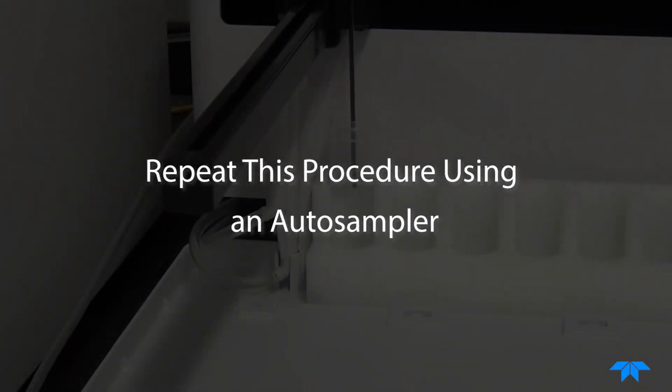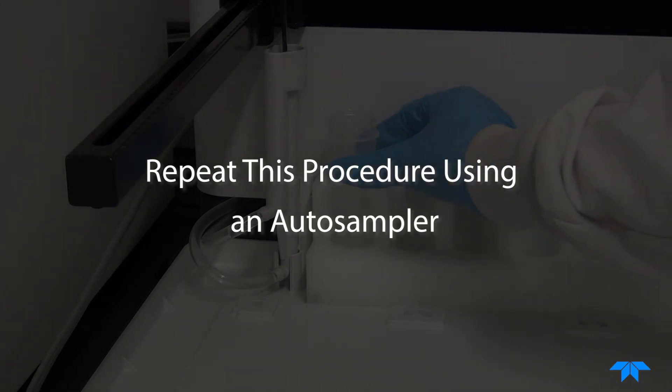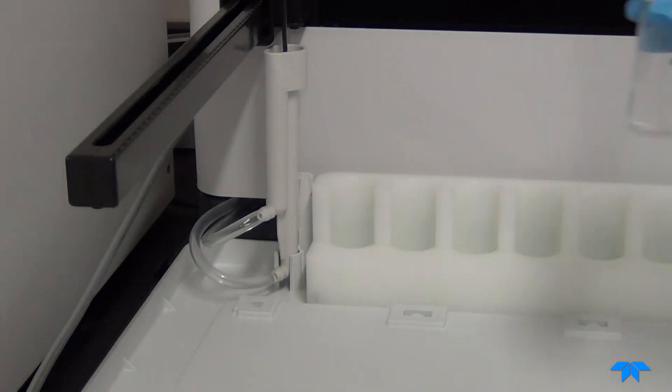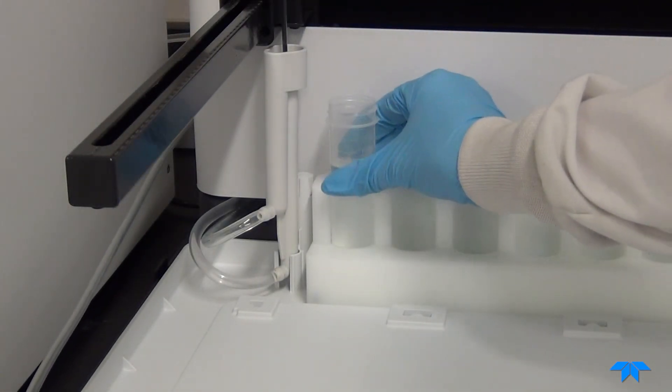Let's repeat this procedure for the sample probe to determine the sample and rinse flow rate. This can be done manually, but today we will demonstrate with the autosampler. Weigh the container with DI water to obtain a before weight, then place it into the autosampler.